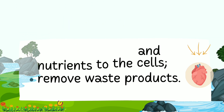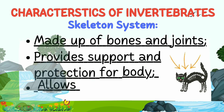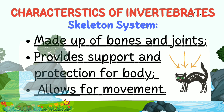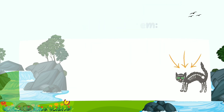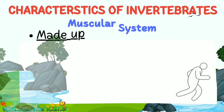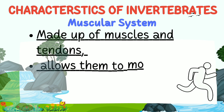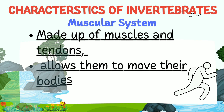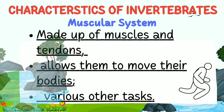Vertebrates have a skeletal system made up of bones and joints which provides support and protection for the body and allows for movement. They also have a muscular system made up of muscles and tendons which allows them to move their bodies and perform various tasks.